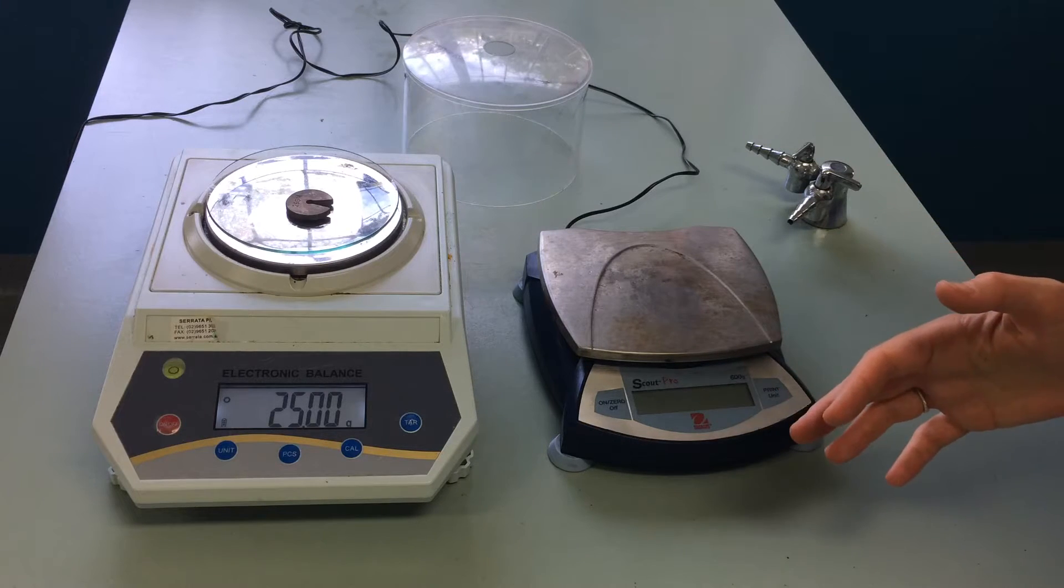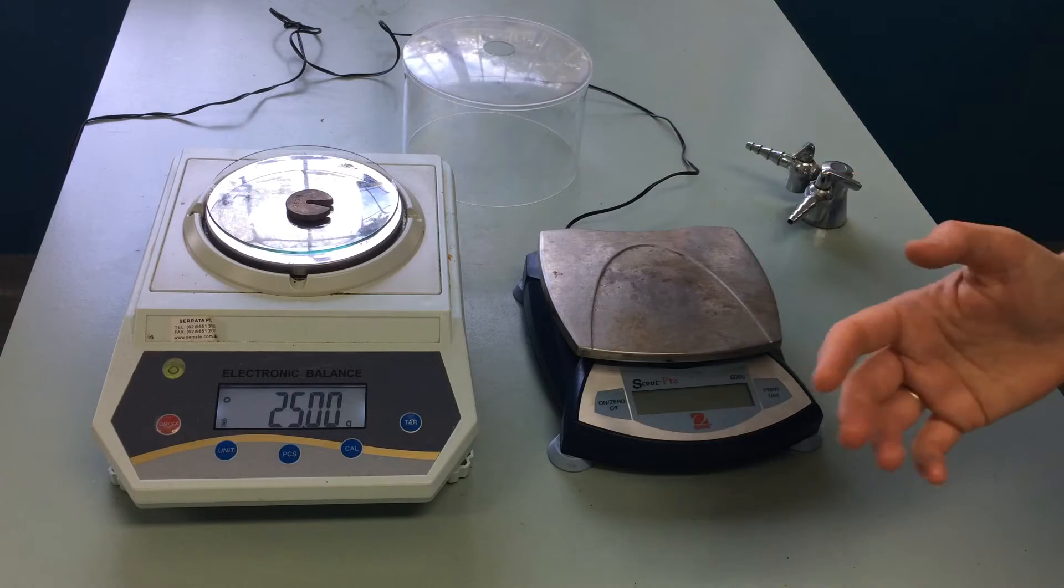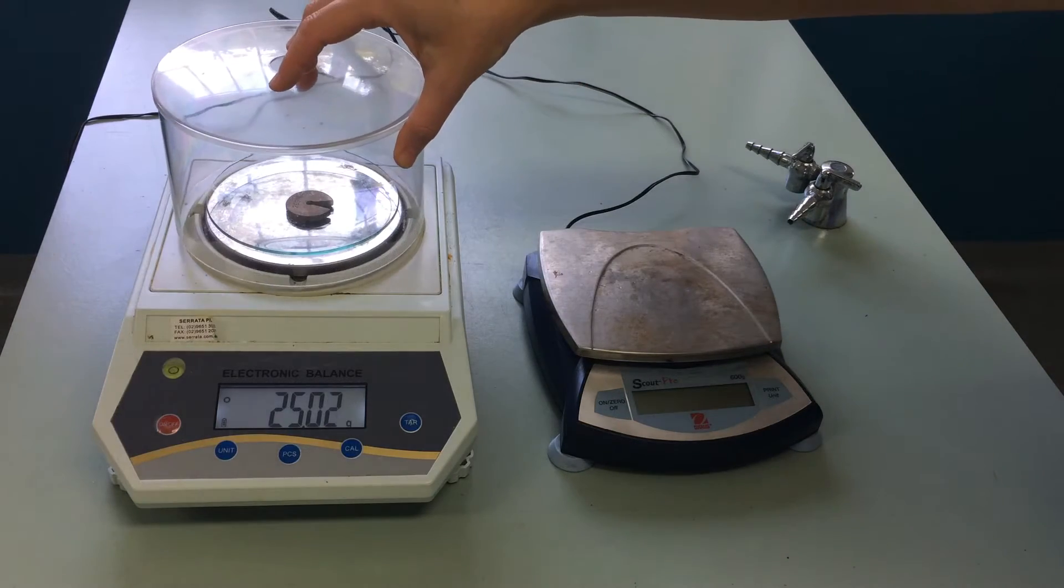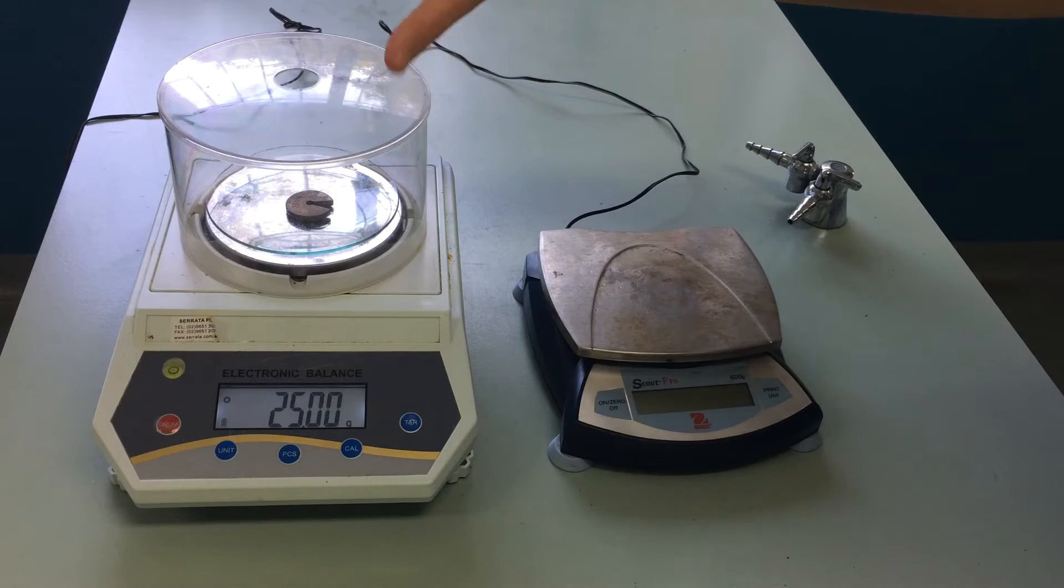Also, some balances are sensitive enough that breezes blowing over them could affect the reading. So if your balance has a lid like this one does, it's always best to place that back on and then take your reading.